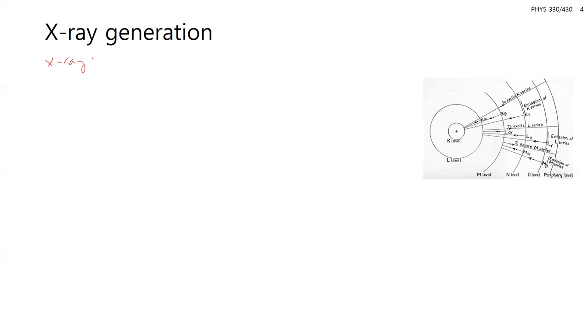Jumping into x-rays — we talked a little bit when we went over crystallography about some of the possible sources for x-rays. I want to go into more detail about that since they're specialized. In that last lecture, we discussed x-ray tubes, where you can generate x-rays by bombarding a metal target with electrons.